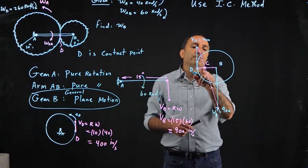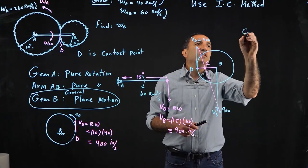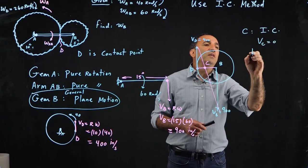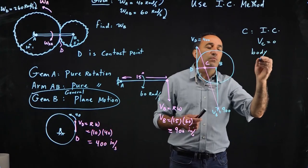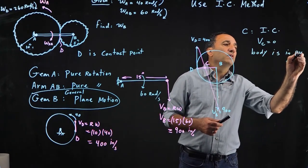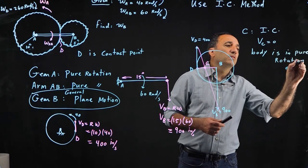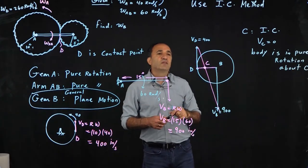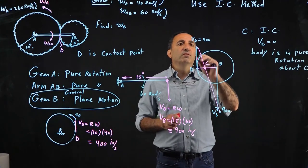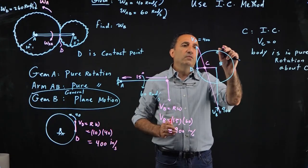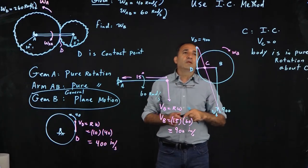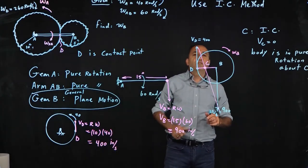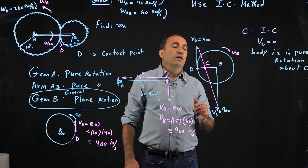So what is the meaning of this? C is the instantaneous center, which means velocity of C is zero, which means the body, the gear at this instant, gear B, is in pure rotation about C. So the instantaneous center, by definition, should have zero velocity. And clearly you could see that based on velocity of D up and B down, it's rotating clockwise. So our objective is to calculate omega B. And remember, when we did it based on the other method, it was 260. Let's see if we can figure out how to find omega B.